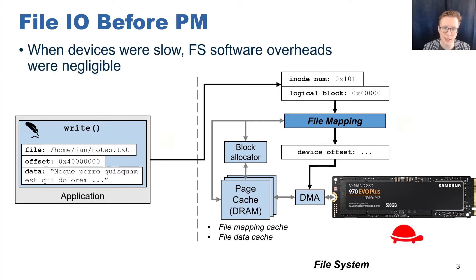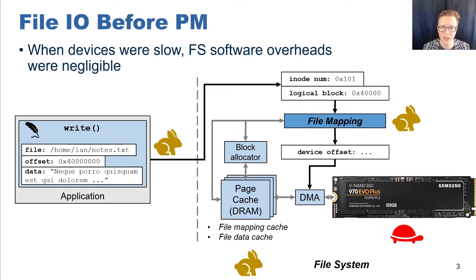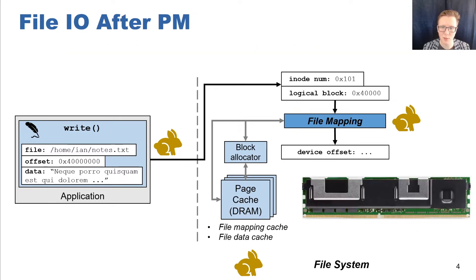Before persistent memory, the access and update performance of the physical device were extremely slow relative to the overhead of the file system software, and so it was fine to have complex software stacks and caching layers within the file system, because all of these operations were fast relative to the slow storage device. Nowadays, we have persistent memory, which can be orders of magnitude faster than block storage devices. This exposes the software overhead of the file system storage stack, as other file system operations now appear much slower relative to the read and write latencies of persistent memory.